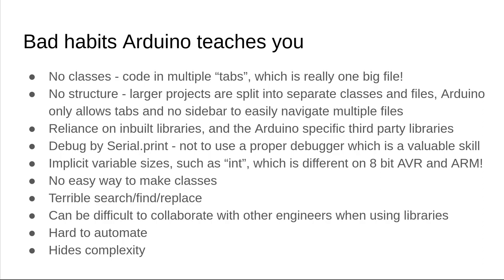Implicit variable sizes: Arduino encourages the use of variable types such as int and long. On an 8-bit platform like the AVR-based Uno, an int is a 16-bit signed integer, but on a 32-bit platform such as ARM, an int is 32 bits. This can lead to very hard-to-find bugs when moving to a different platform, and in industry the use of int is highly discouraged. On an 8-bit platform, using a 16 or 32-bit integer has a performance penalty. Explicit types such as uint8_t or uint16_t are better, as they are always exactly 8 or 16 bits.